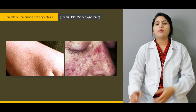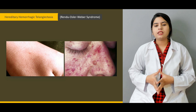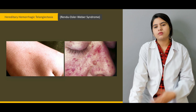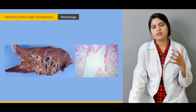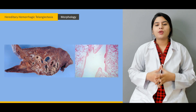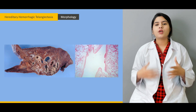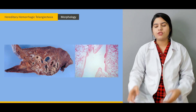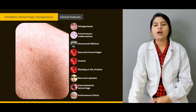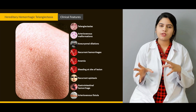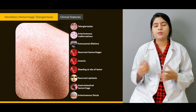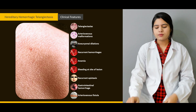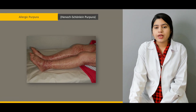Then we will discuss hereditary hemorrhagic telangiectasia — what this disorder actually is, the pathogenic mechanisms behind it, its pathogenesis, and its morphology and appearance. We will also discuss the different clinical features of this disease: how it manifests, its characteristic clinical features, and what other parts of the body it affects.